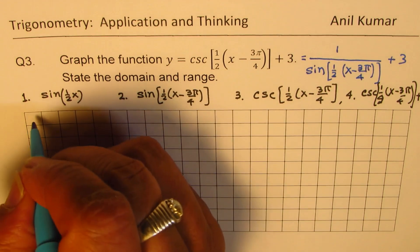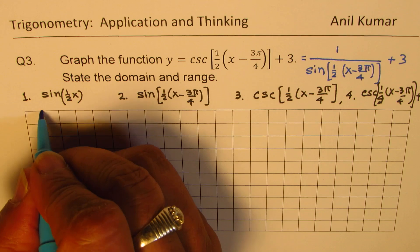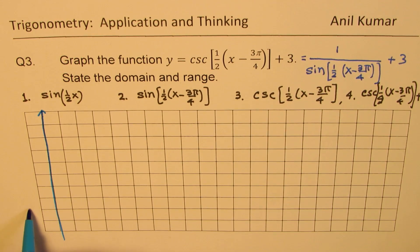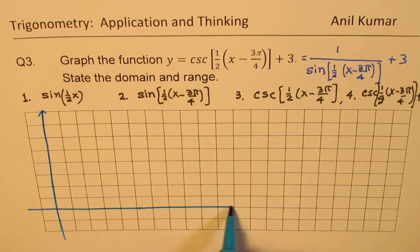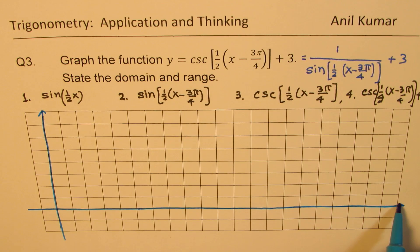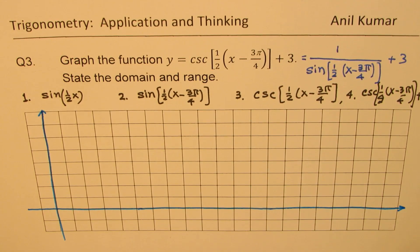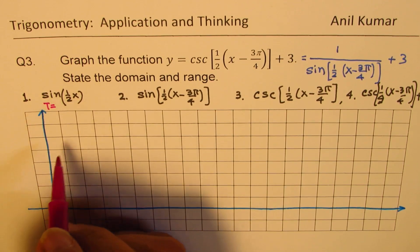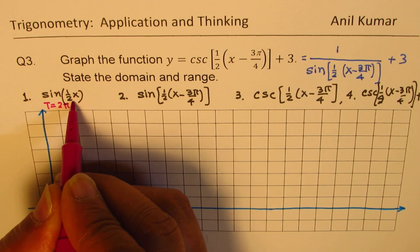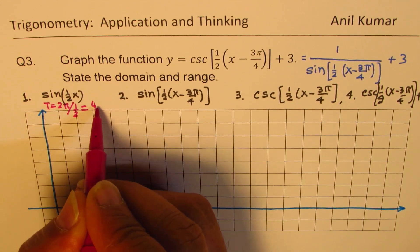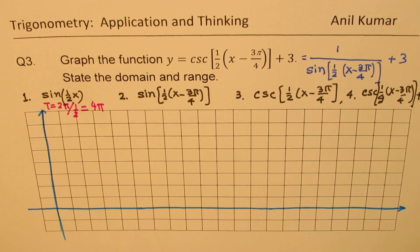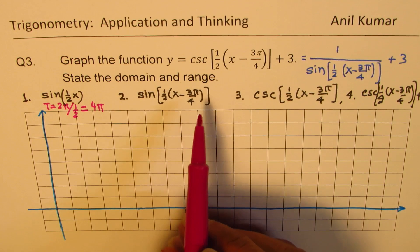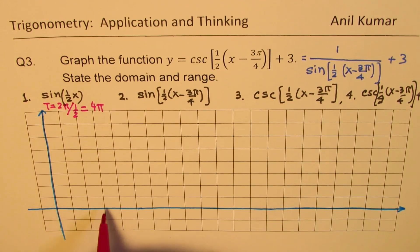Let's set up our axes. This is the y-axis, and this is our x-axis. For step one, we have sin(½x). The time period T = 2π divided by ½, which gives us 4π. So 4π is the time period for sin(½x).